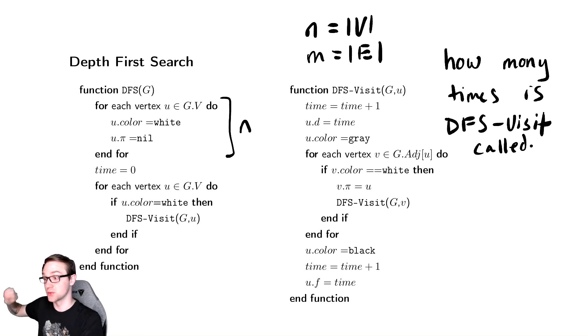It has to visit every vertex because we're checking for every single vertex, and the only way the color of a vertex can be not white is if it was done in DFS-Visit. So it visits at least every vertex once.